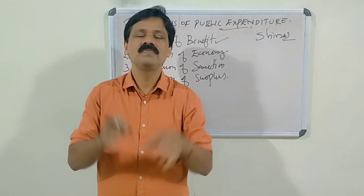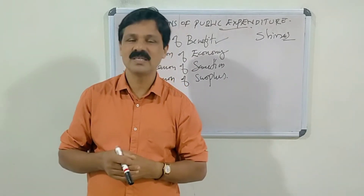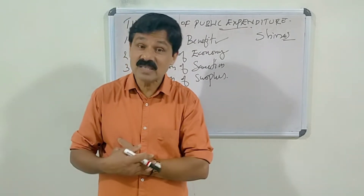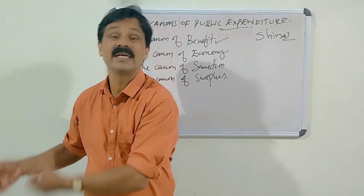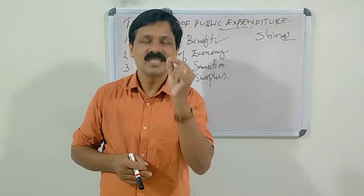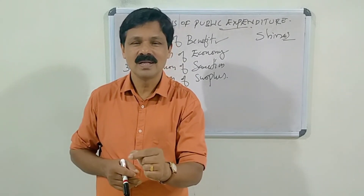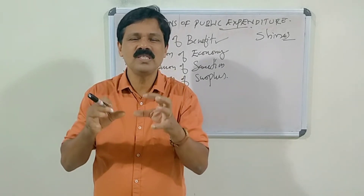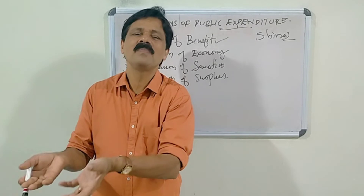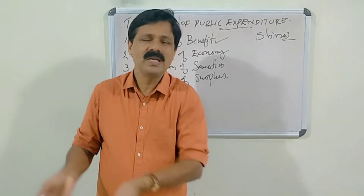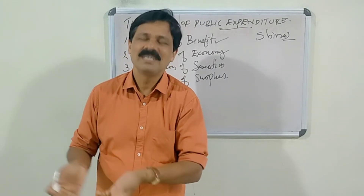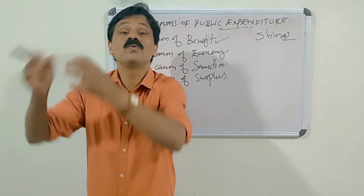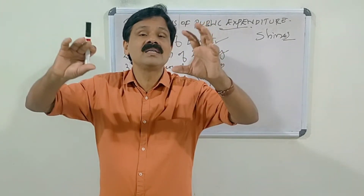Contrary to this, if the country is experiencing deflation or depression — characterized by falling prices, falling profits, large-scale unemployment, pessimism, poverty, and misery — then the government should resort to deficit financing. The government should spend more and more money to provide employment opportunities to the unemployed. When employment increases, income increases, production increases, and demand for goods and services also increases, raising aggregate effective demand.